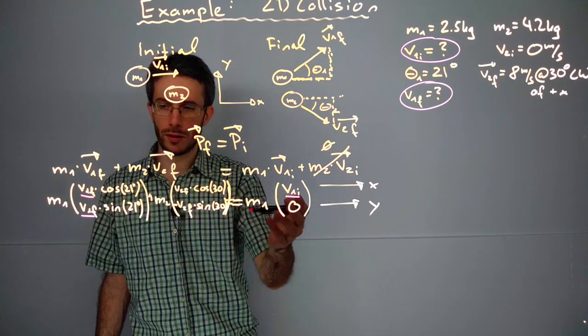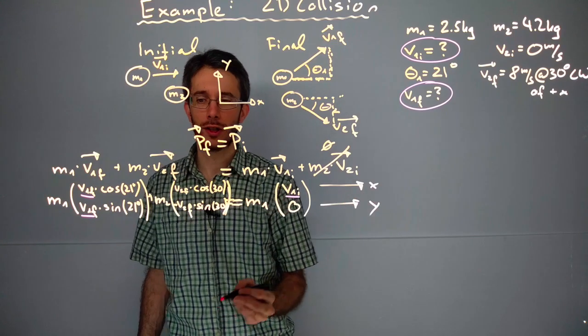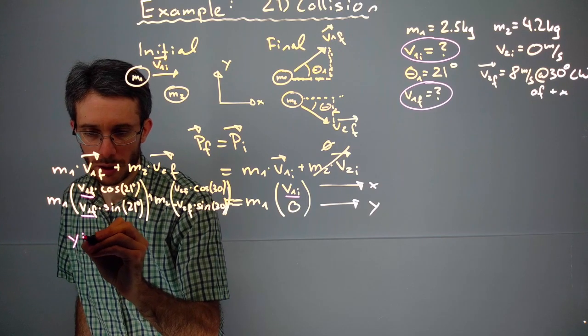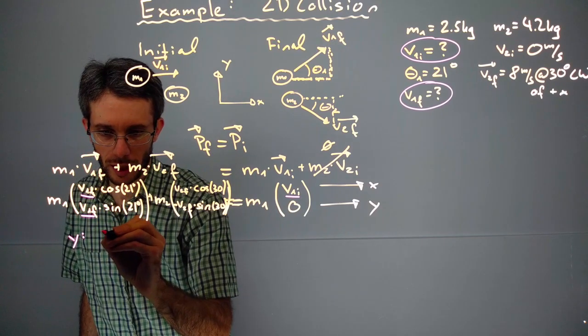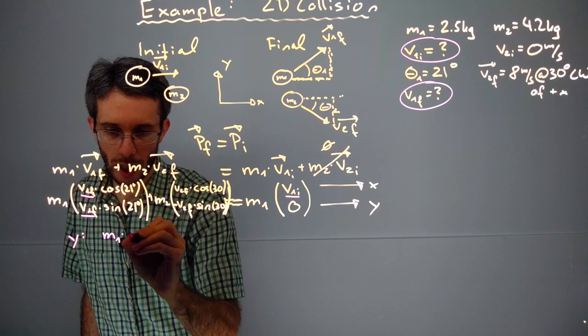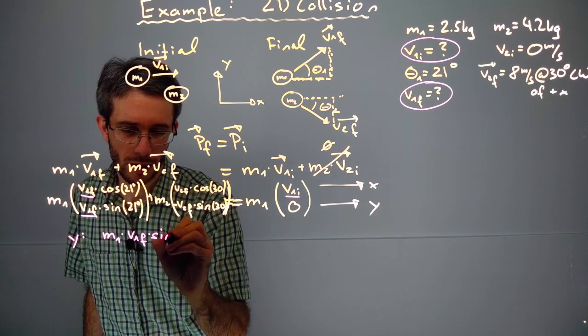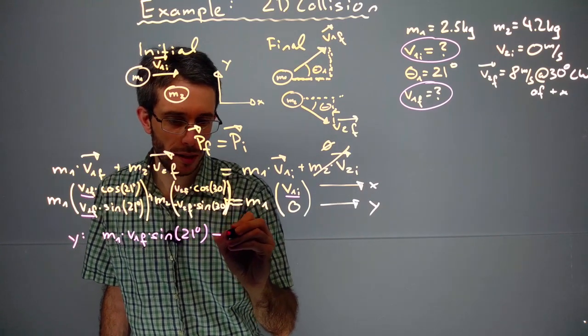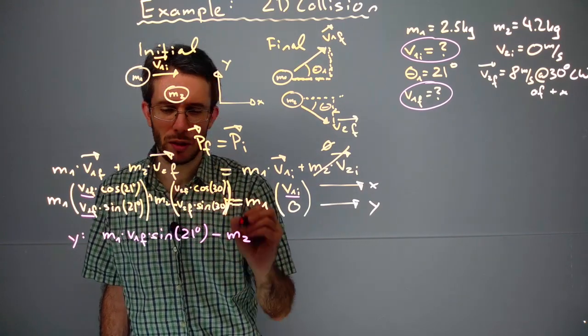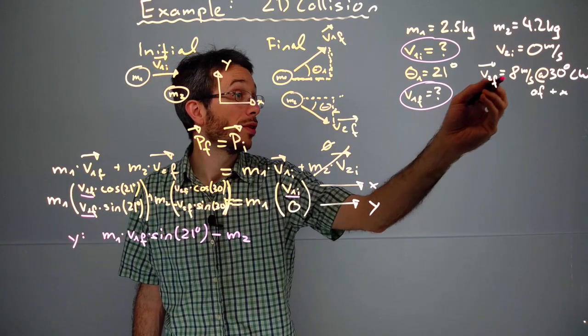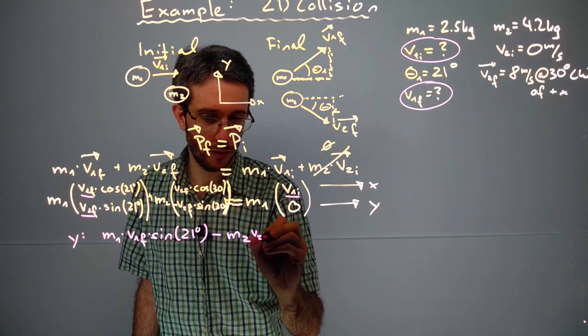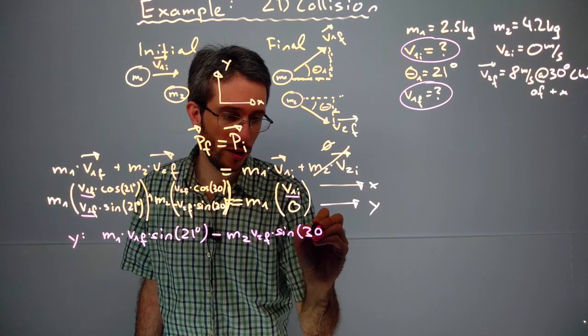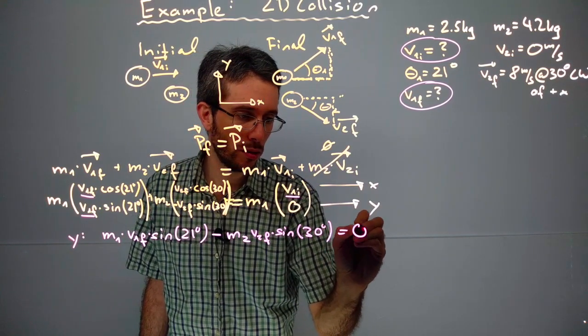Which equation is easier to solve? The y equation looks easier, so I'm going to start with the y equation. The y equation says m1 times v1 final times sine 21 degrees minus m2 times v2 final, which is 8 meters per second, times sine 30 degrees equals zero.